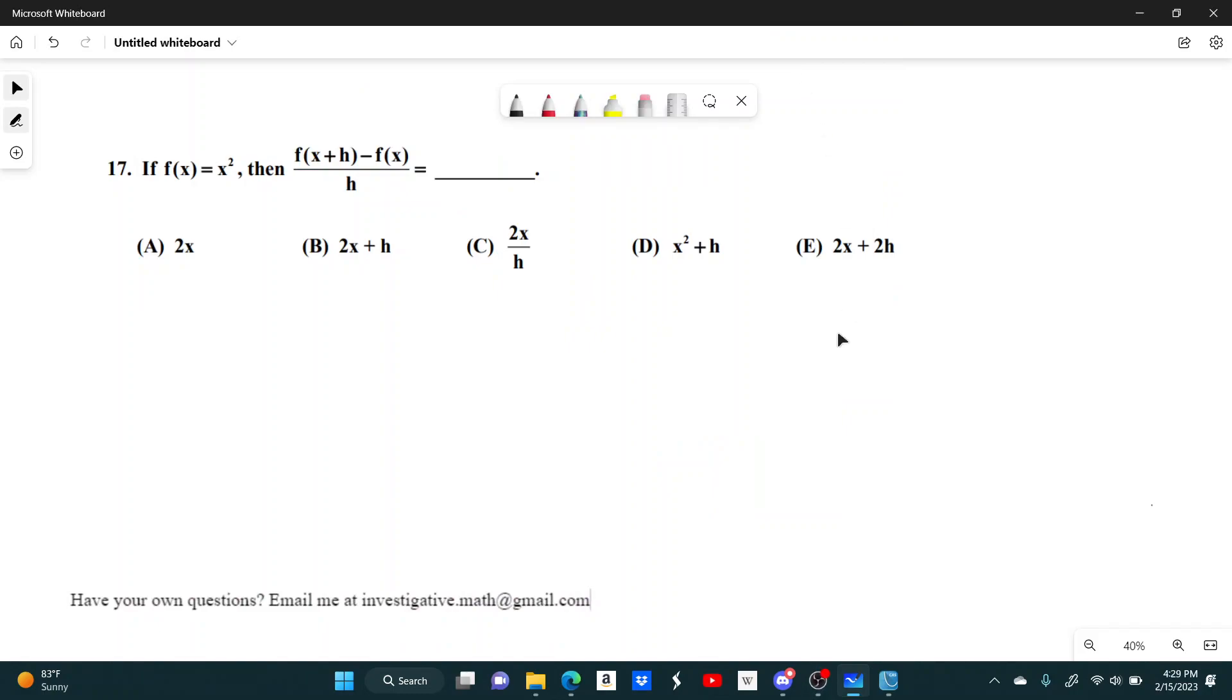Number 17. If f of x equals x squared, then f of x plus h minus f of x over h equals what?